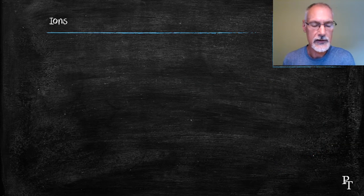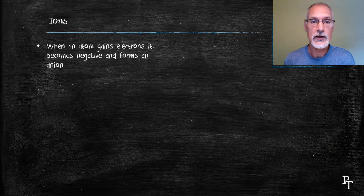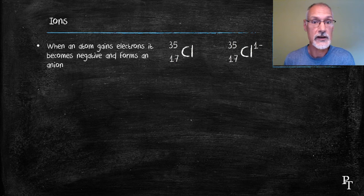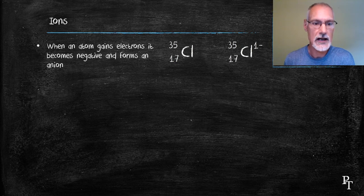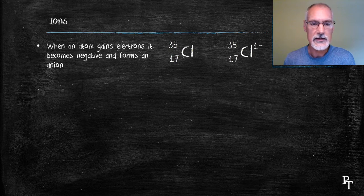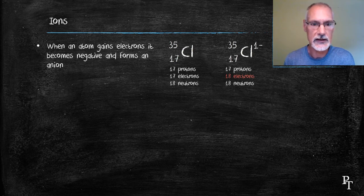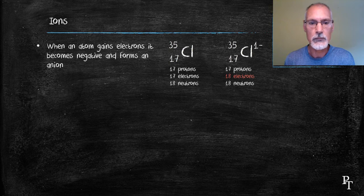When an atom gains electrons, it becomes negative and forms what we call an ion. In particular, when it gains electrons, we call it an anion. So here I have chlorine. The difference between these two is the number of electrons. Normally, chlorine with 17 protons has 17 electrons. The gaining of one electron causes it to have more electrons than protons and hence a negative one charge.